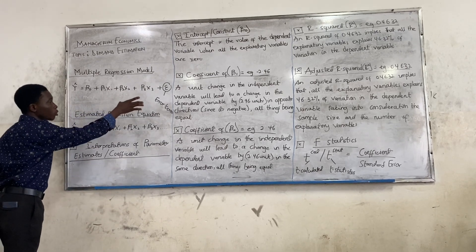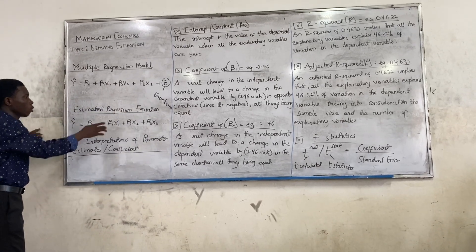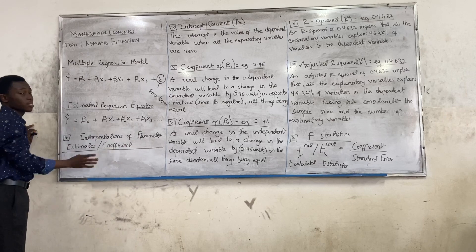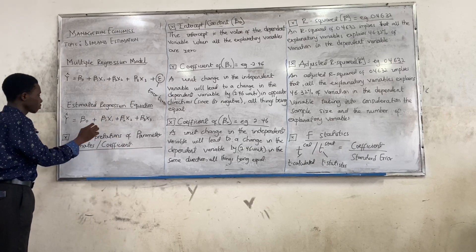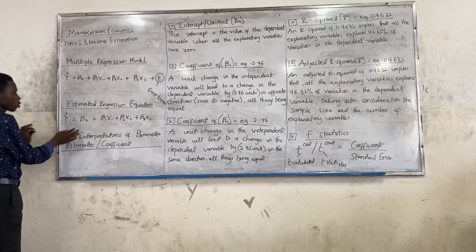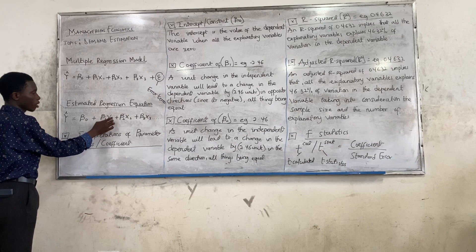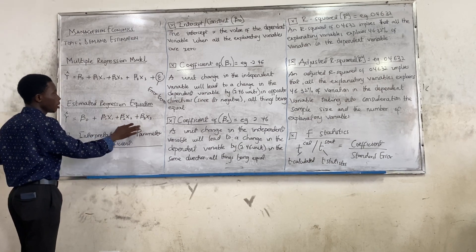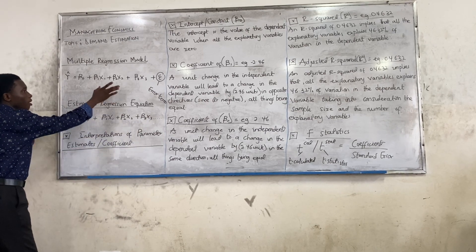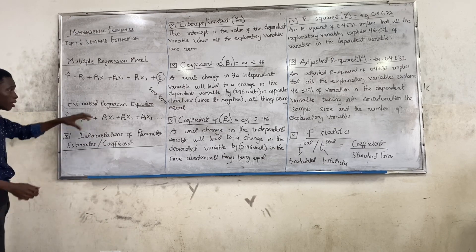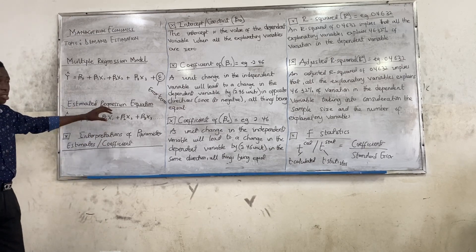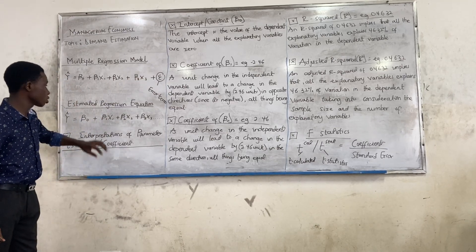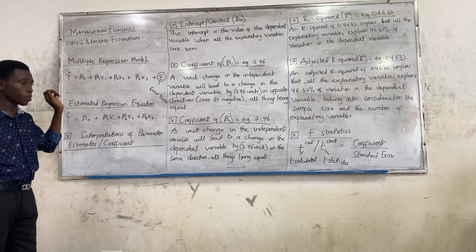With this multiple regression model, we estimate it to get the estimated regression equation. Y₀ is equal to β₀ plus b₁x₁ plus b₂x₂ plus b₃x₃. It's actually the same structure, but there's the estimated regression equation — you eliminate the error term. We only use this to solve our questions.